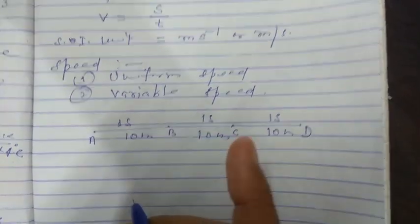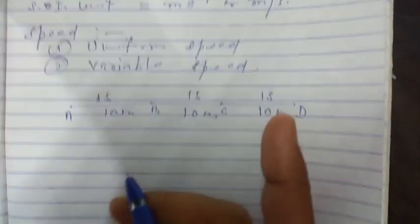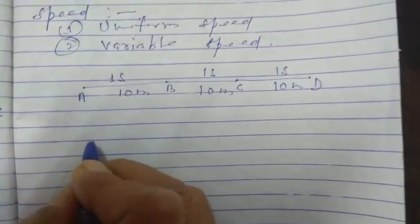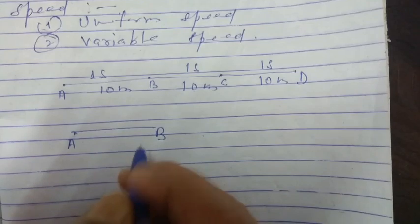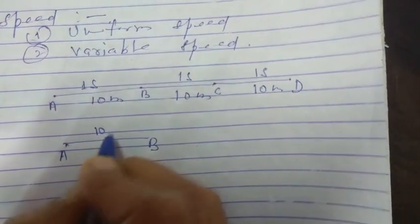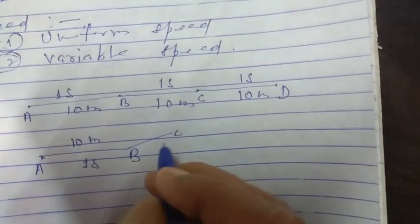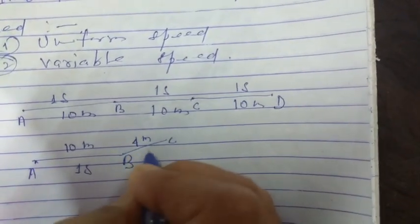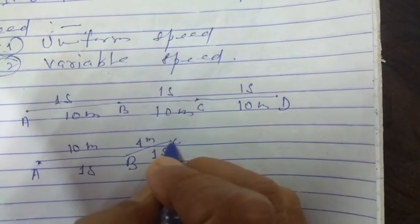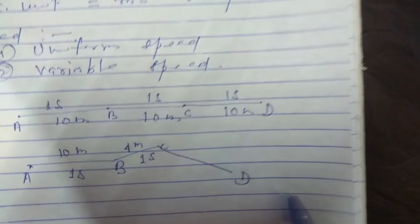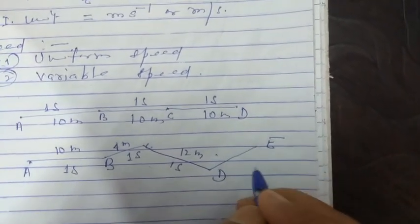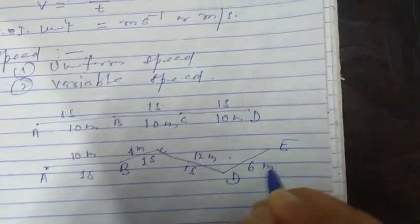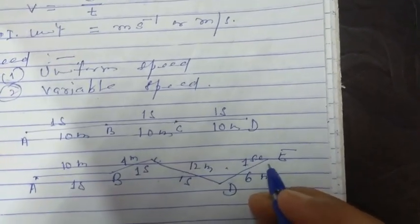Variable speed: when a body covers unequal distances in equal intervals of time, or equal distances in unequal intervals of time, the speed is said to be variable. For example, a body goes from A to B covering 10 meters in one second, B to C covering 4 meters in one second, C to D covering 12 meters in one second, D to E covering 6 meters in one second — the object is moving with variable speed.